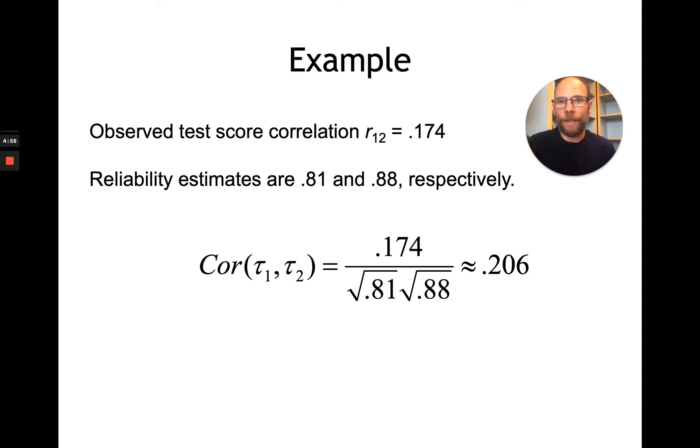However, in the social sciences, typically measurements have reliabilities only between 0.7 and 0.9, so usually far from perfect. And therefore, we have to take this into account when we look at correlation coefficients between observed variables, then we have to assume that those are typically lower than the true correlations.